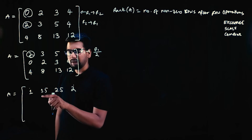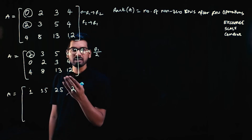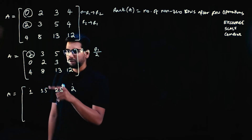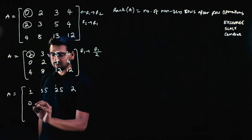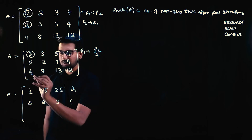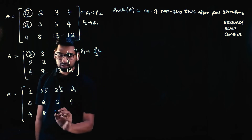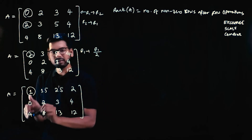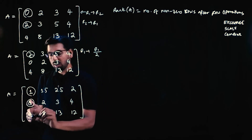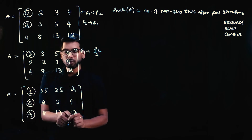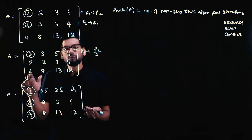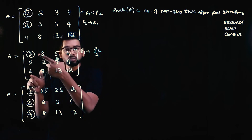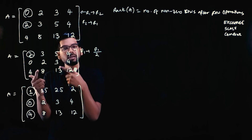Matrix elements can be fractions, decimals, negative numbers — any mathematical value. After scaling, the second row doesn't change: 0 2 3 4, and the third row doesn't change: 4 8 13 12. Now we need to use the first row to make the first element of the third row zero. We can do 4 minus 2 times 2 equals zero — since 4 minus 4 is 0.